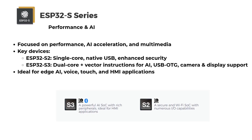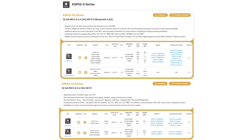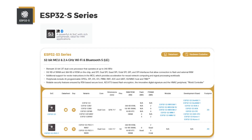The ESP32-S series is focused on performance, AI acceleration and multimedia. Key devices include the ESP32-S2 — single-core, native USB and enhanced security — and the ESP32-S3 — dual-core with vector instructions for AI, USB OTG, camera and display support. Ideal for Edge AI, voice, touch and HMI applications.